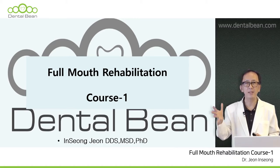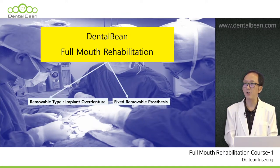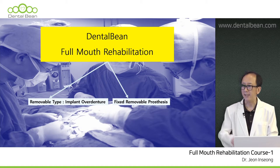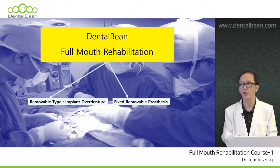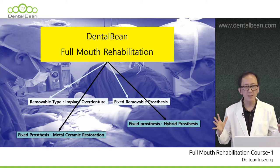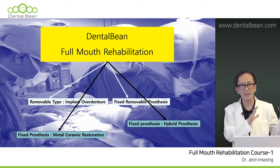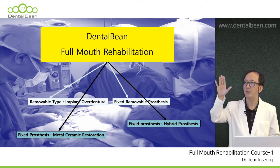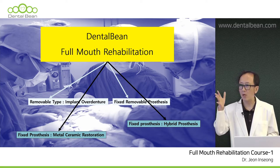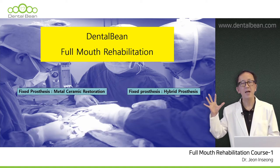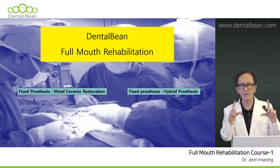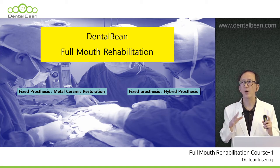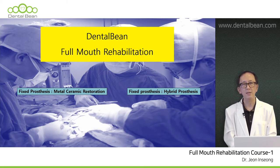Treatment planning is made after patient discussion, so there are too many checkpoints. In this course I want to address every factor for a successful full mouth rehabilitation. There are four types of prosthetic design: removable type implant overdenture for poor lip support areas, fixed removable, hybrid removable, and in this course I want to focus on fixed prostheses — metal ceramic restoration and hybrid type.